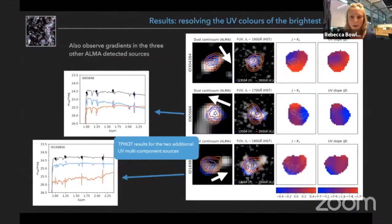So I don't have time to present the rest of the sample, but just to give you a very quick preview, of course you can pause this if you're watching the recording. We do observe gradients in the other three sources where we have a strong ALMA detection, and this is really indicating that this is quite a common effect in these high redshift bright sources.